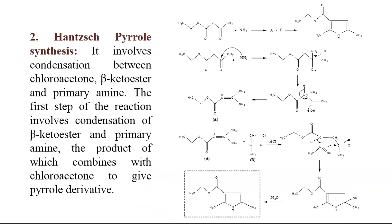The second method for synthesis of Pyrrole is Hantzsch Pyrrole Synthesis. In Hantzsch Pyrrole Synthesis, there is a condensation between chloroacetone, a beta-keto-ester, and a primary amine. The first step involves condensation of the beta-keto-ester and the primary amine, the product of which then combines with chloroacetone to give the Pyrrole derivative.